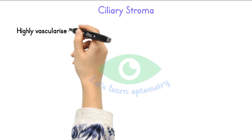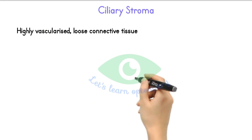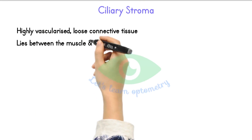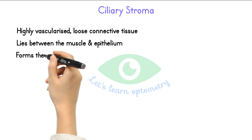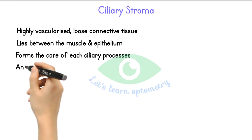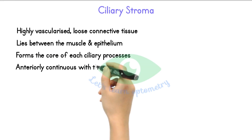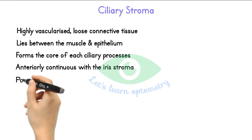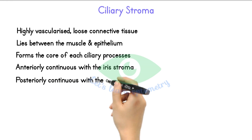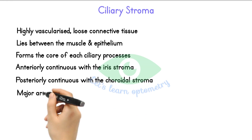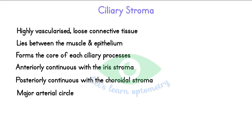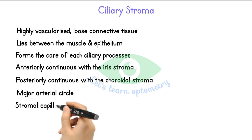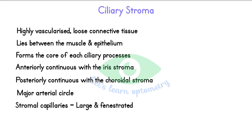Ciliary stroma is the highly vascularized loose connective tissue. It lies between the muscle and the epithelial layers and forms the core of each of the ciliary processes. Anteriorly, the stroma is continuous with the iris stroma, and posteriorly continuous with the choroidal stroma. The major arterial circle of the iris is located in the ciliary stroma, anterior to the circular muscle and near the iris root. The stromal capillaries are large and fenestrated, particularly in the ciliary processes, and most are located near the pigment.